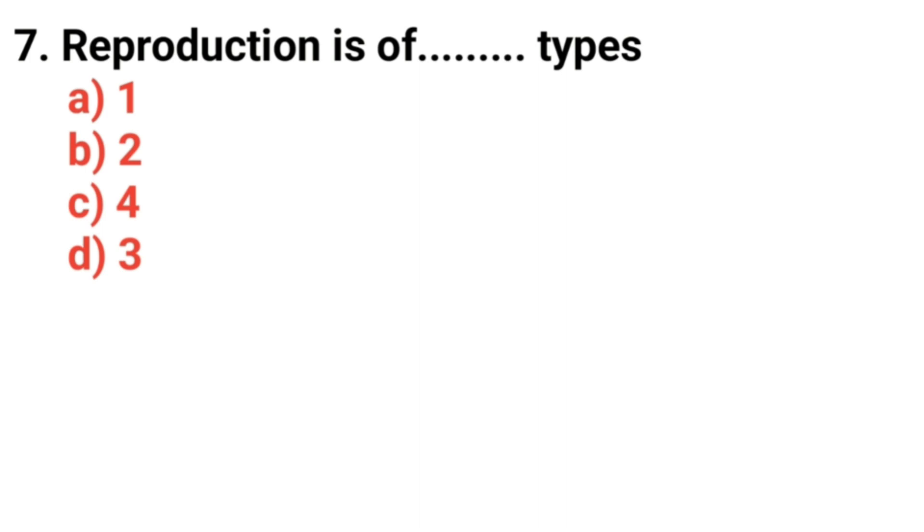Question number 7. Reproduction is of how many types? Answer option B. Two.